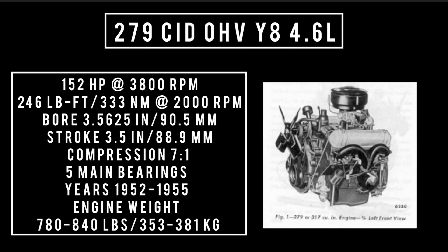Introduced in 1952 for the Ford heavy-duty truck line: the 279 cubic inch displacement Y-Block, 4.6 liters. It's good for 152 horsepower at 3,800 rpm, 246 pound-feet or 333 newton meters at 2,000 rpm, with a bore of 3.5625 inches and a stroke of 3.5 inches.